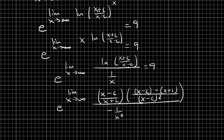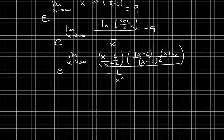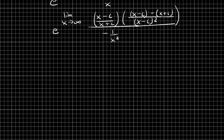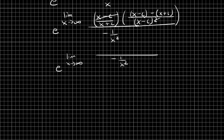At this point we want to simplify. We have e to the limit as x approaches infinity, with negative 1 over x squared in the denominator. The (x minus c) factor cancels, and on the top we can simplify because the x's cancel, leaving negative c minus c, which is negative 2c. That is over (x plus c) times (x minus c), which we can write as x squared minus c squared.